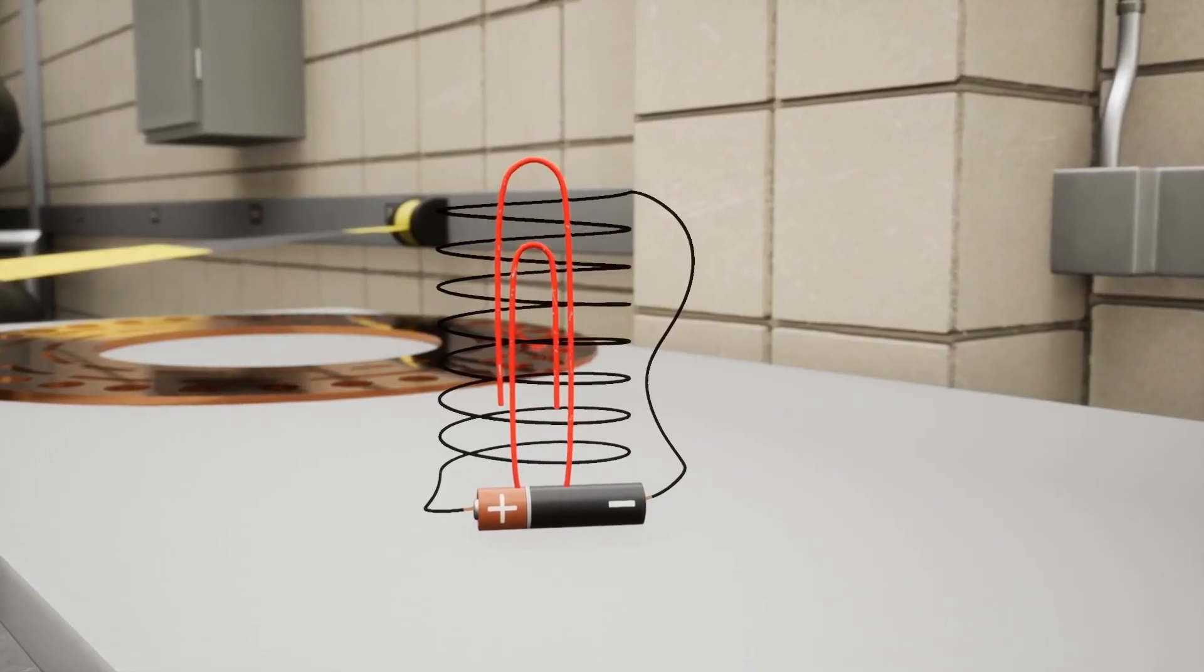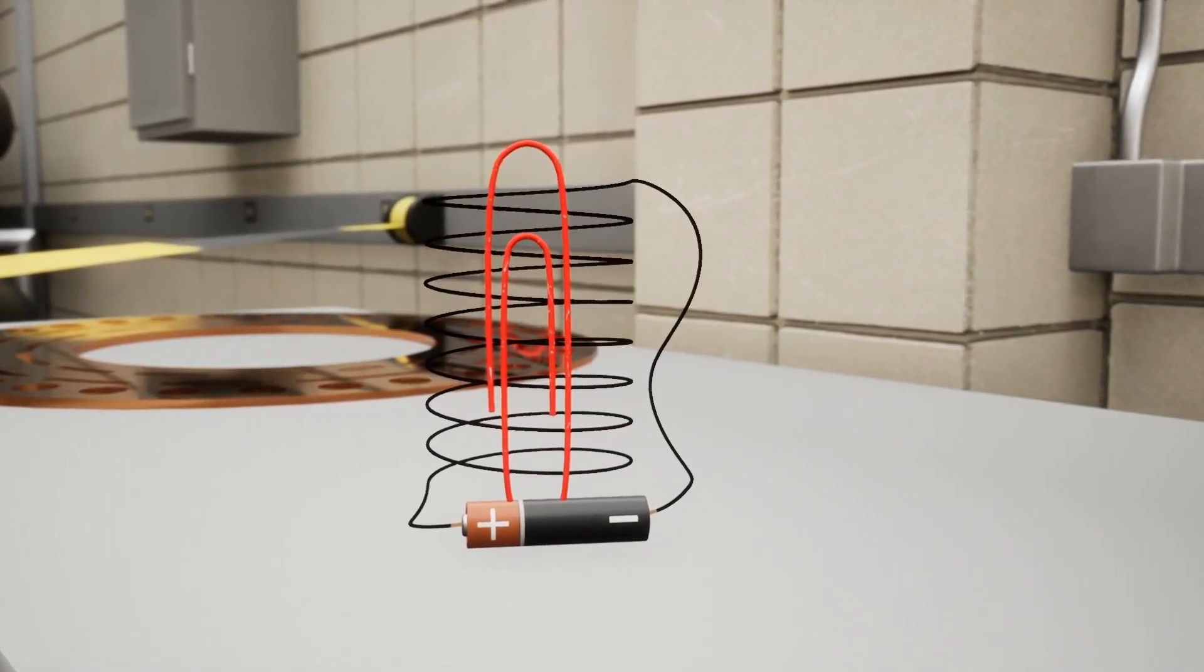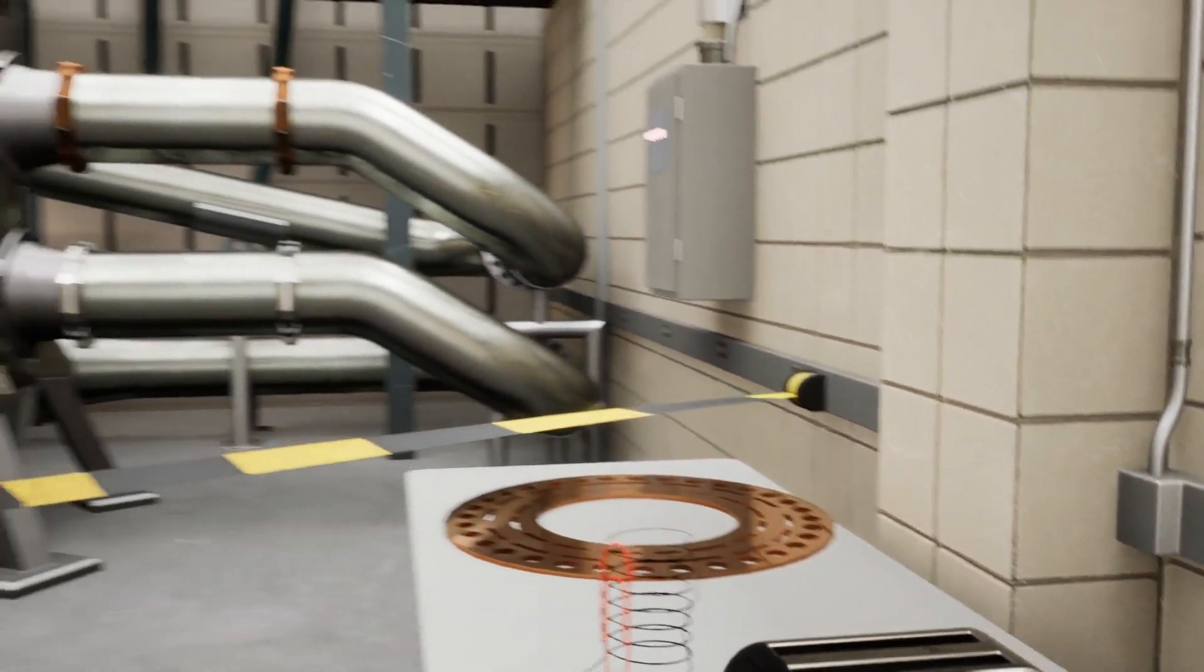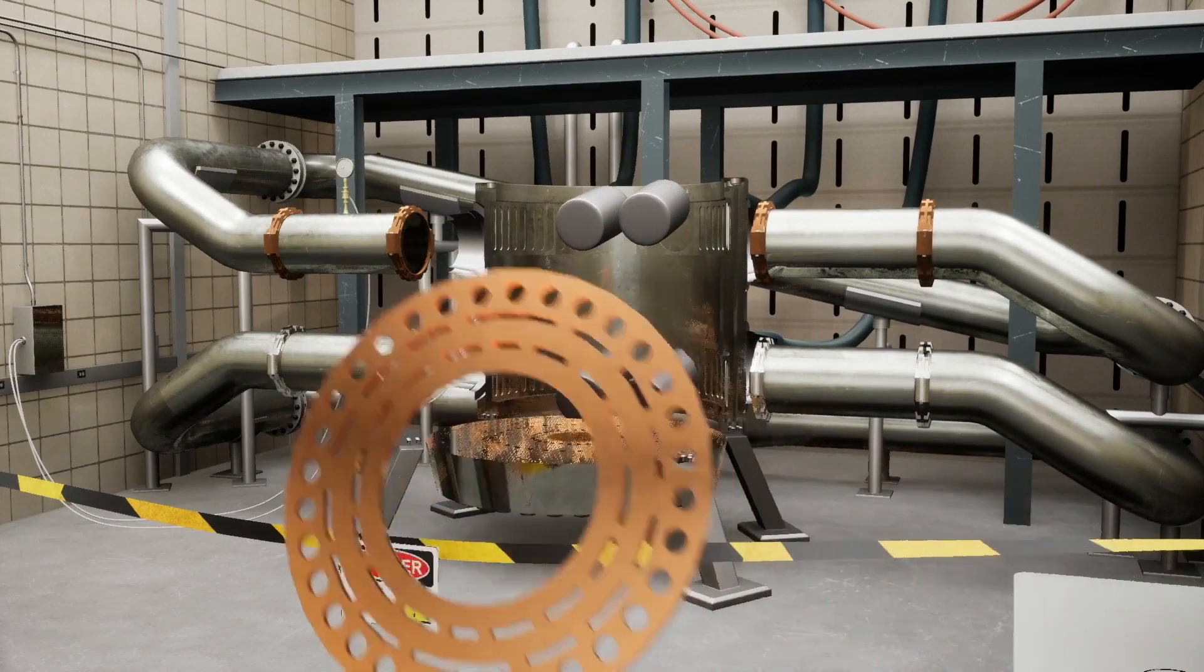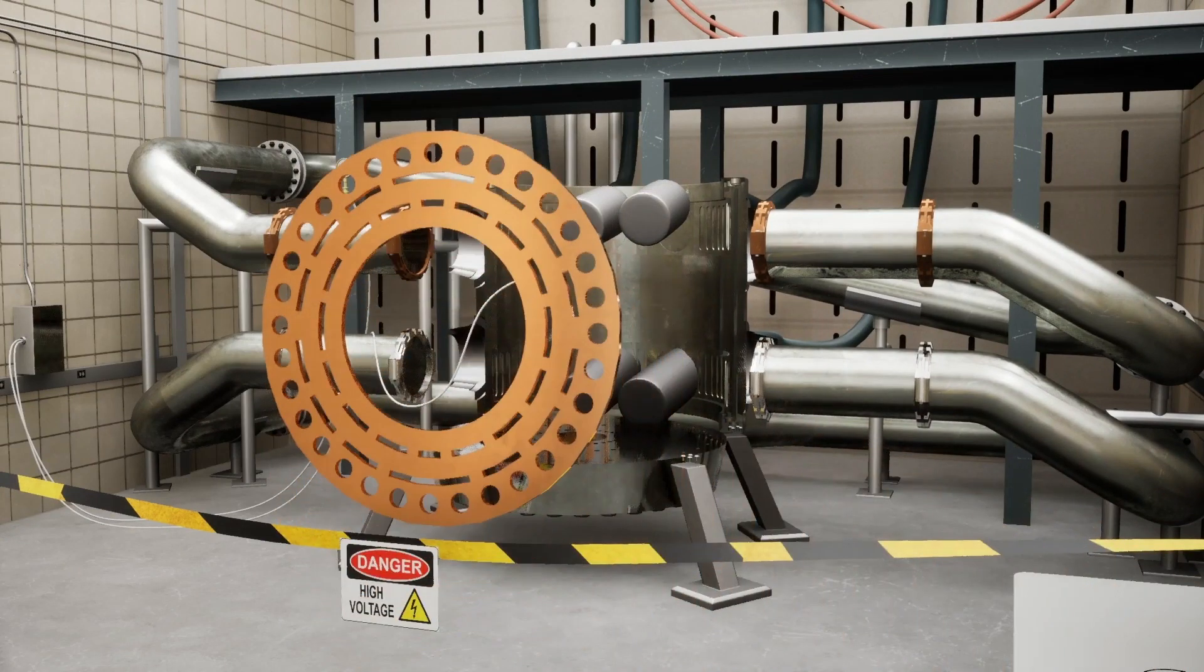At the mag lab, we take the idea of a simple electromagnet and scale it way up. Instead of copper wires, we use copper and silver discs and stack them in a coil.